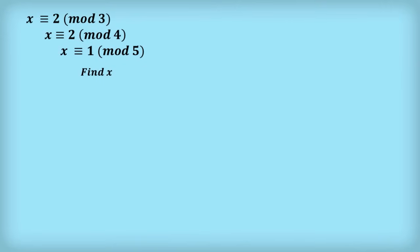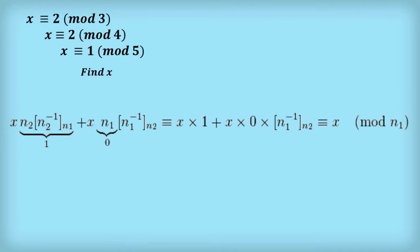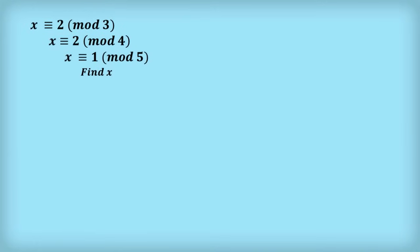Normally the Chinese remainder theorem is explained with complicated notation. Hard to understand. But I can make it easy. If I explain this problem, I think you'll be able to solve these problems forever.